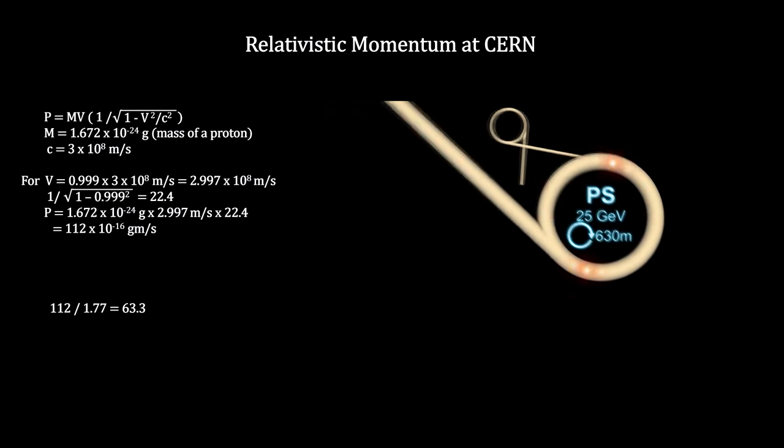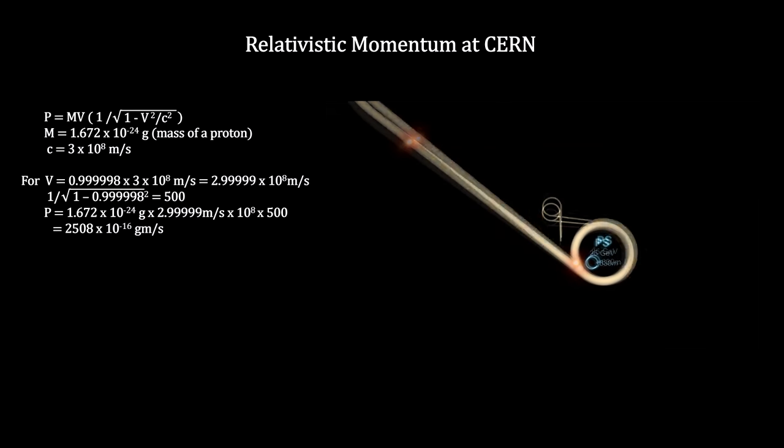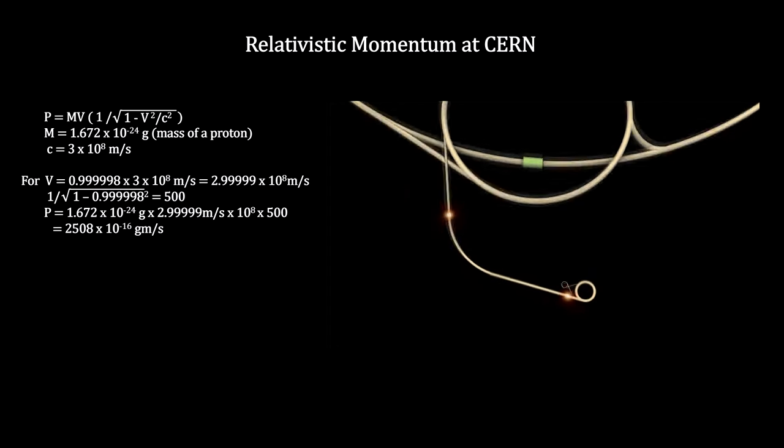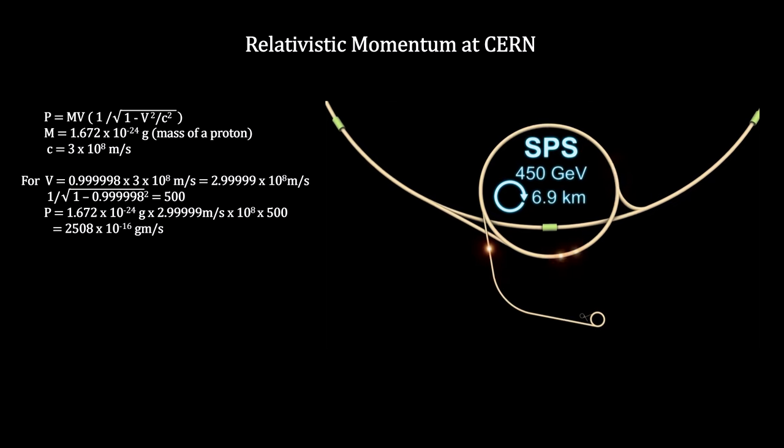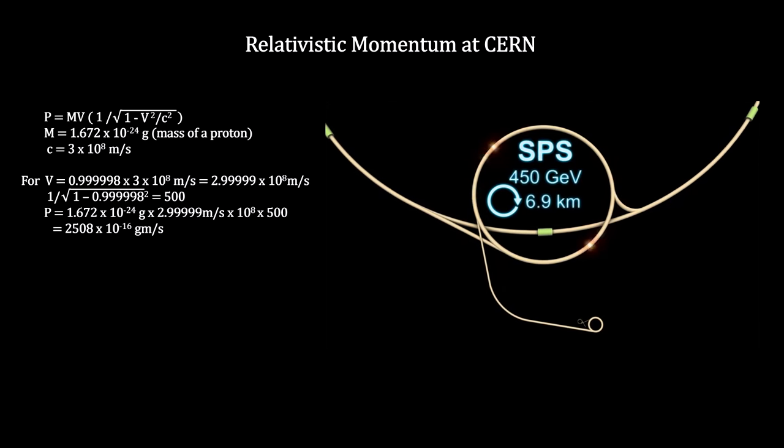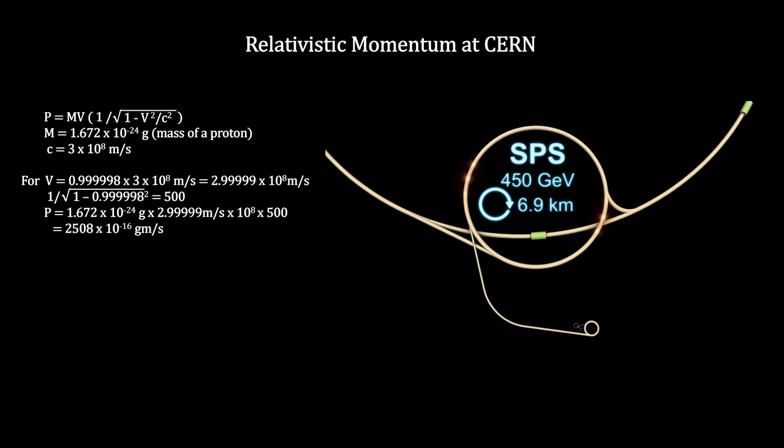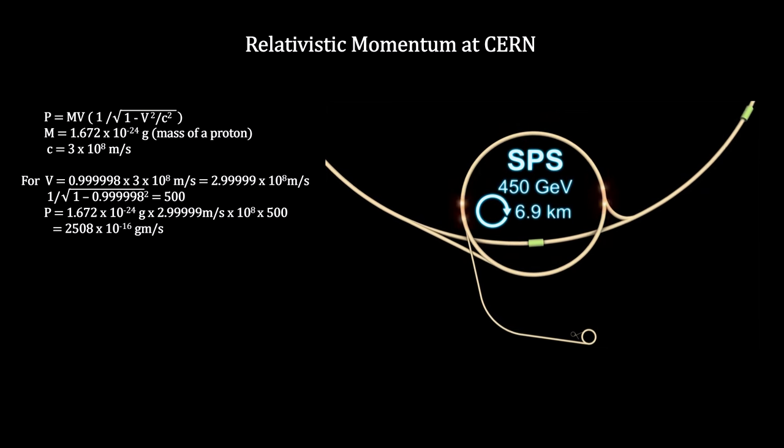The protons are then channeled into the super proton synchrotron. This is a huge ring almost 7 km in circumference. The best that it can do is to increase the velocity of the protons by around 8% to 99.9998% of the speed of light. The protons' momentum has now jumped by over 1,400 times its momentum at the end of the first acceleration.